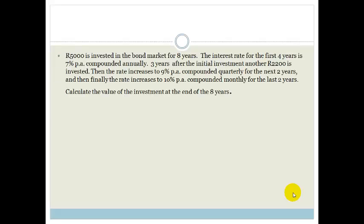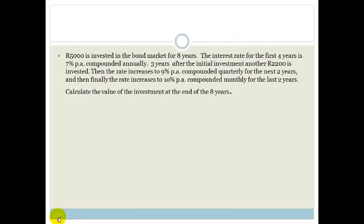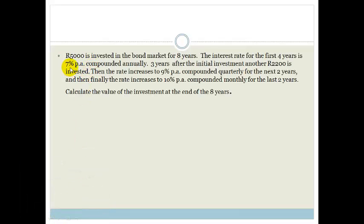R5,000 is invested in the bond market for eight years. The interest rate for the first four years is 7% per annum compounded annually. Three years after the initial investment, another R2,200 is invested. Then the rate increases to 9% per annum compounded quarterly for the next two years. And then finally, the rate increases to 10% per annum compounded monthly for the last two years.